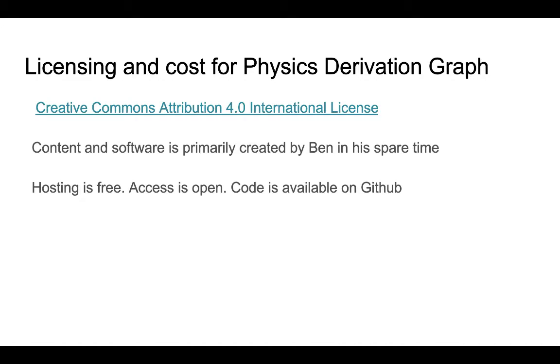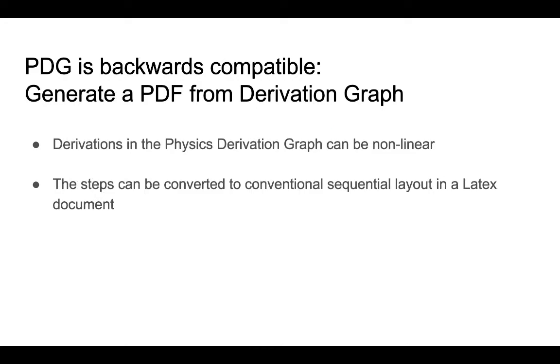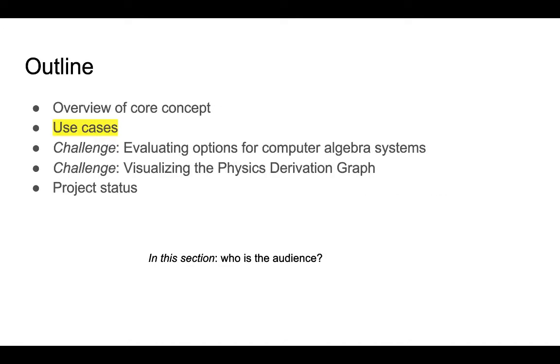All I've been talking about so far is a graph-based presentation and input method. But that's not to say we want to discard all the historical capability. The cool export feature of the physics derivation graph is that you can generate a TeX text file and PDFs from that. So you can recover the original linear presentation format that you might want for a paper or presentation. So that closes out the overview of the main idea.